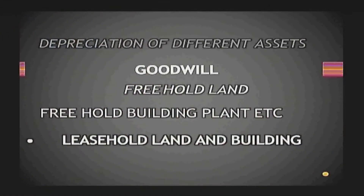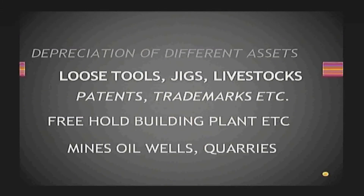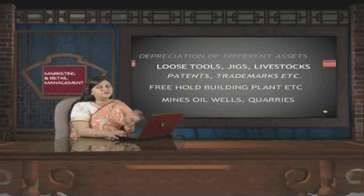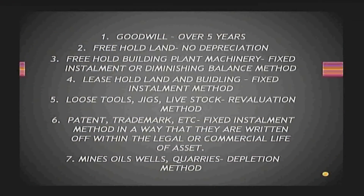Now we will learn about depreciation of different assets. These can include goodwill, which is an intangible asset; freehold land; freehold building; plant and machinery; leasehold land and building; loose tools; livestock; patents; and trademarks. Firstly, goodwill will be depreciated over a period of five years as per accounting standards, which prescribe that goodwill needs to be written off within a period of five years.